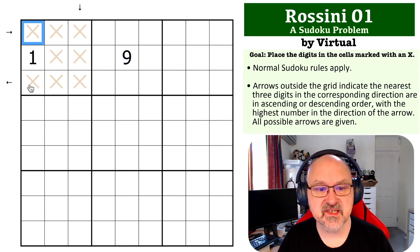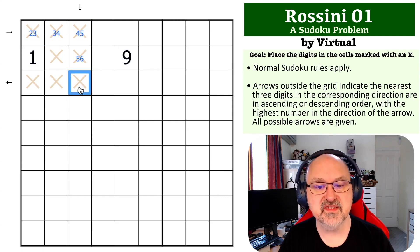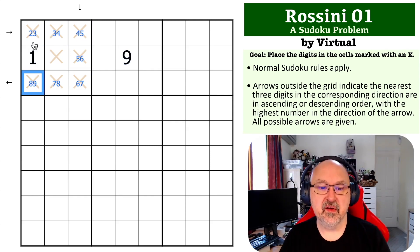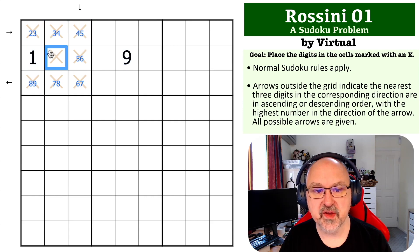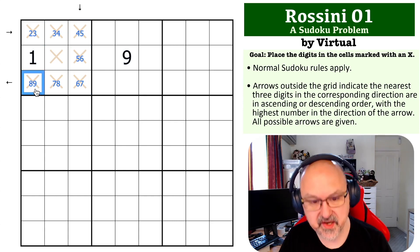So because this is a 7-cell thermo, this could be 2-3, this could be 3-4, 4-5, 5-6, 6-7, 7-8, and 8-9. Now with that, we can ask ourselves, where does 9 go in this box? Because we can't put 9 here, so the only place we can put 9 is right here.